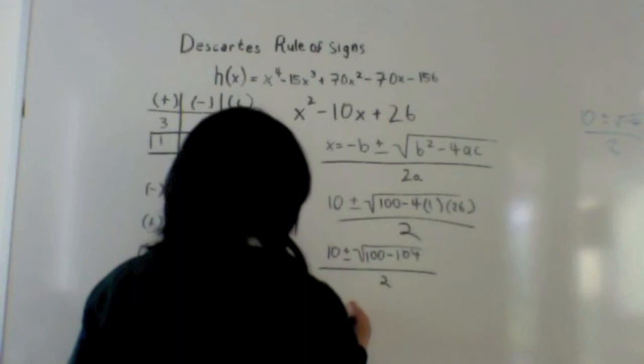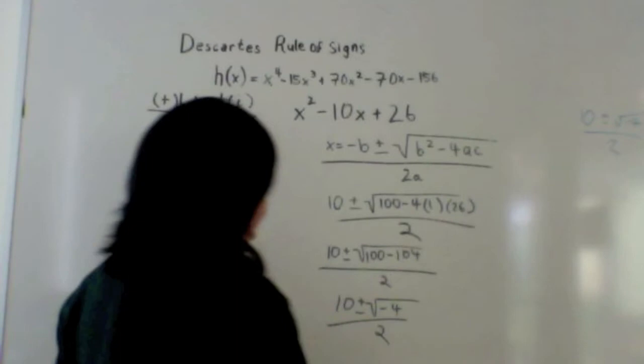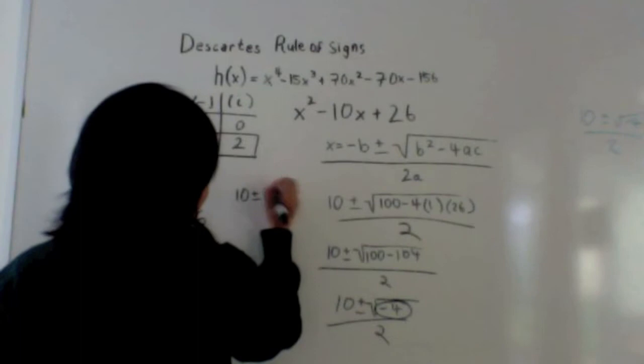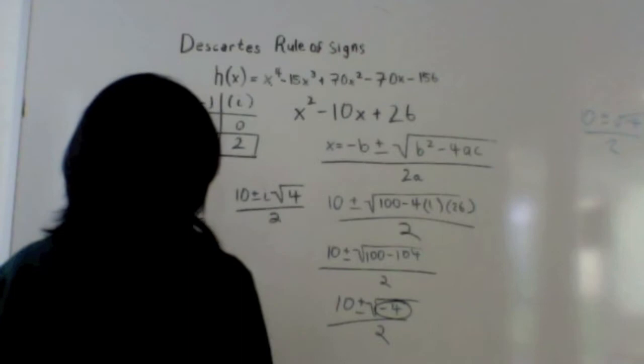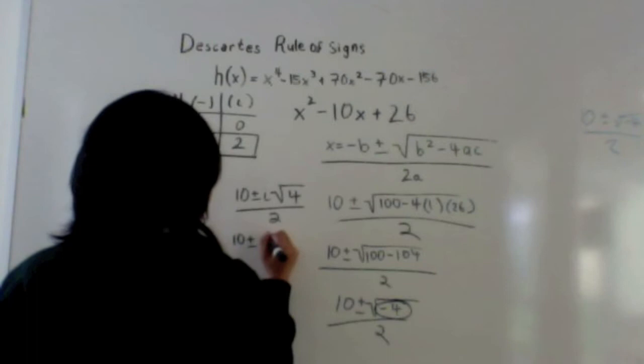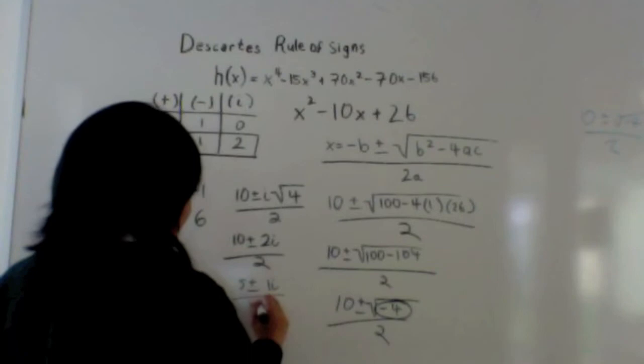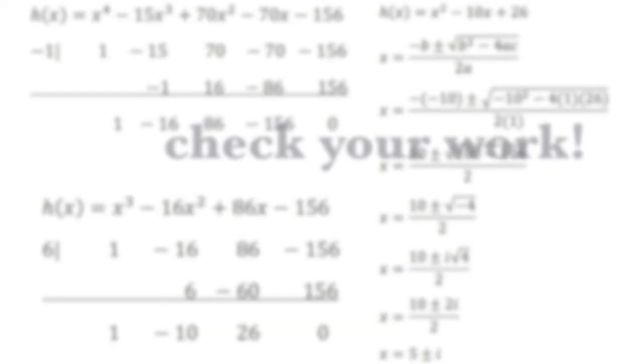Simplifying further gives 10 plus or minus the square root of negative 4, over 2. Since you can't have a negative under the radical, you take it out as i. So you get 10 plus or minus 2i, over 2. Simplified, the final answer is 5 plus or minus i.